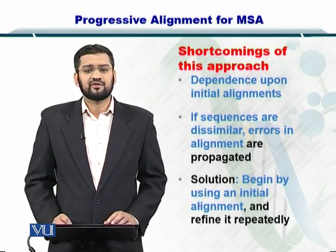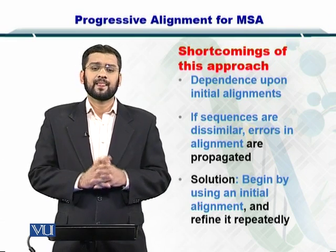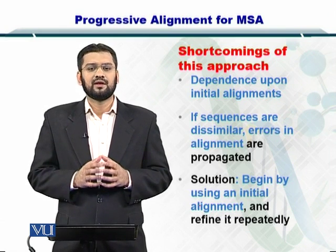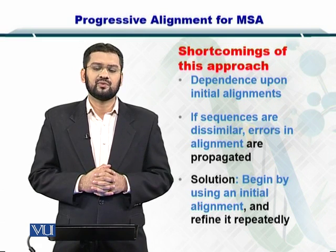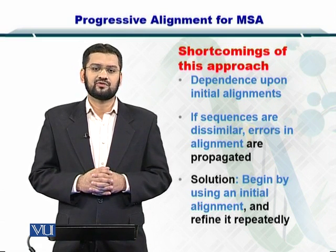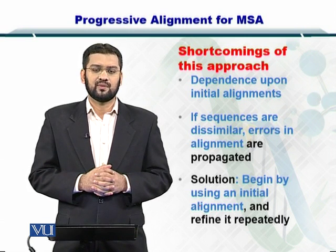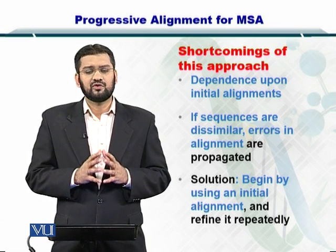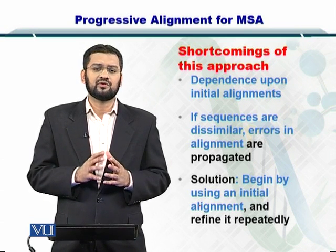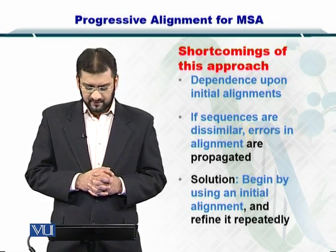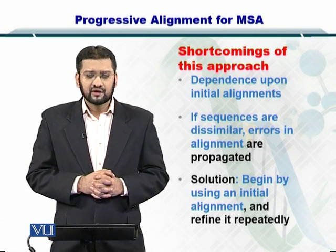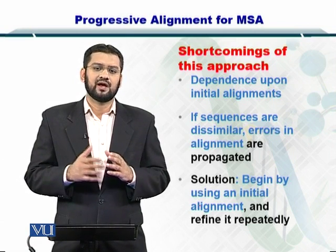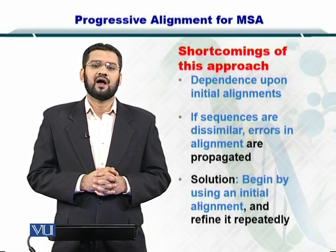This approach has some shortcomings. For instance, if the first alignment you performed is incorrect, then your entire guide tree will be biased towards that, meaning there is a strong dependence on the first alignment used to create the guide tree. Also, if the sequences are dissimilar, this can introduce errors in your alignment. To overcome this, you create a guide tree and then repeat the process iteratively to create a better, improved version of the guide tree.